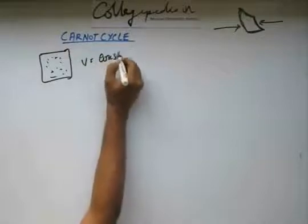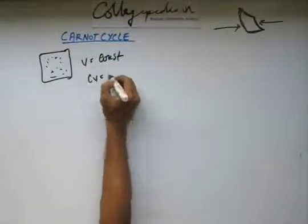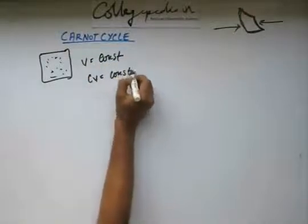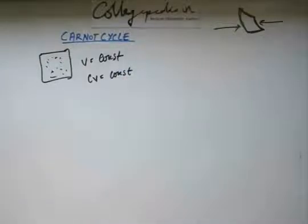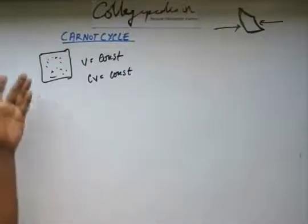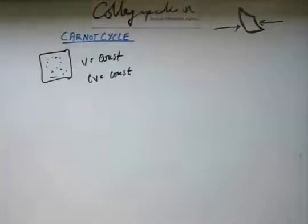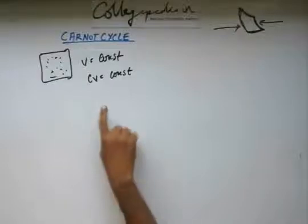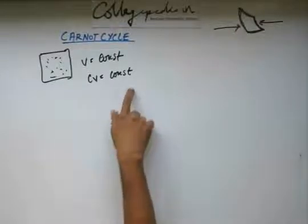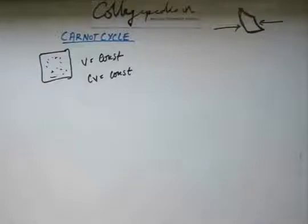Suppose I have an ideal gas inside a chamber. The volume is constant. It won't change. And considering the CV also to be constant. CV is a weak function of temperature. For a small variation in temperature, it's a good approximation that we consider CV to be constant. When we are heating it, suppose I am adding certain amount of heat into it.